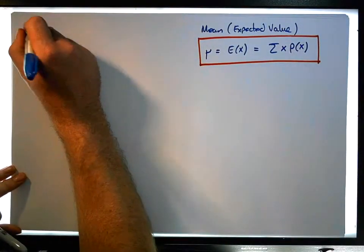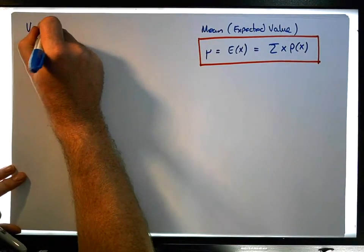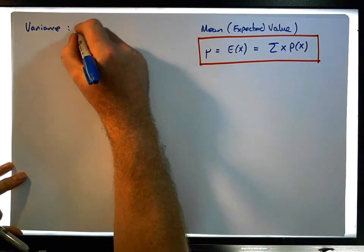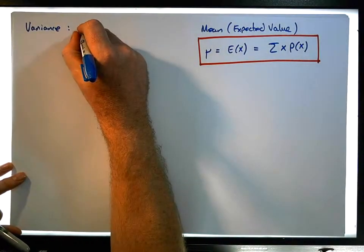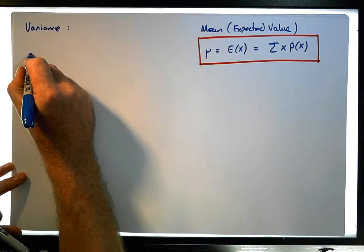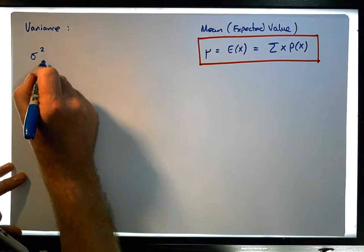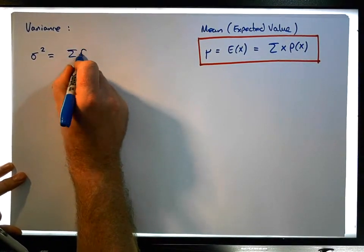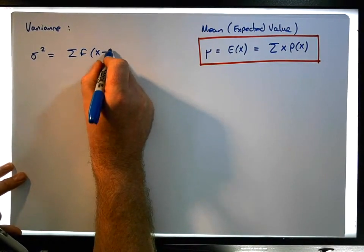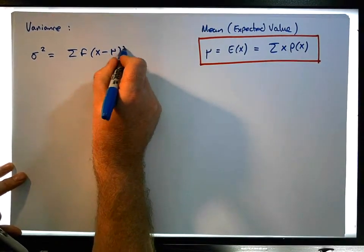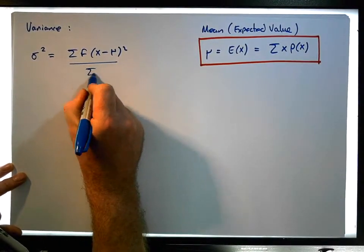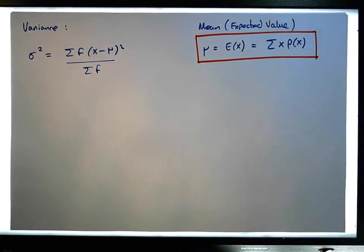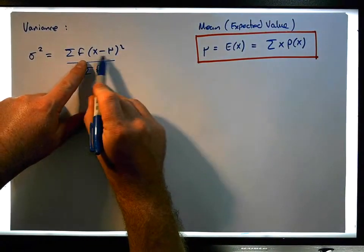Now let's consider the variance. The variance formula from a discrete frequency distribution perspective is: σ² equals the sum of the frequencies times (x − μ)², all divided by the sum of the frequencies. We can expand this particular term in the same way.